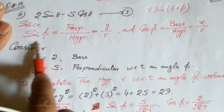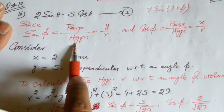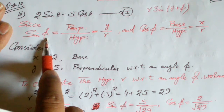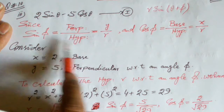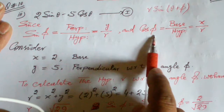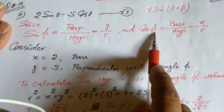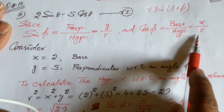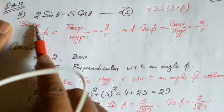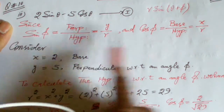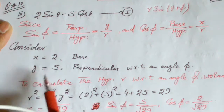sin(φ) is equal to perpendicular divided by hypotenuse. With respect to φ, consider perpendicular is y and hypotenuse is r. cos(φ) is equal to base divided by hypotenuse, where base is x. To convert: 2 corresponds to cos(φ) and 5 corresponds to sin(φ).